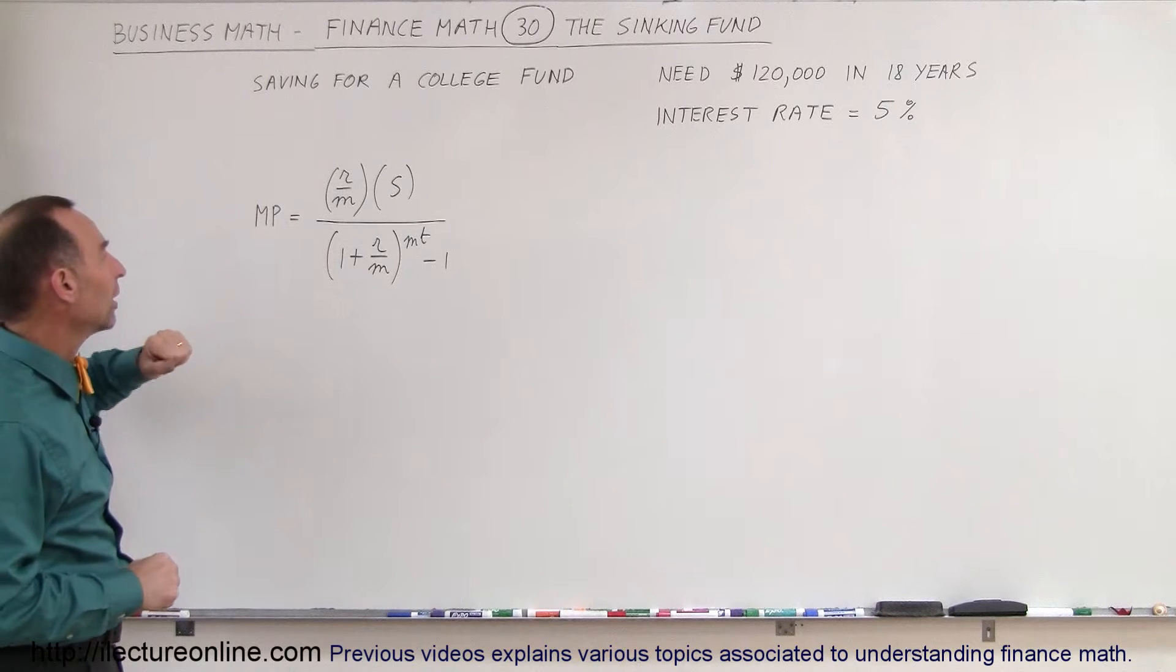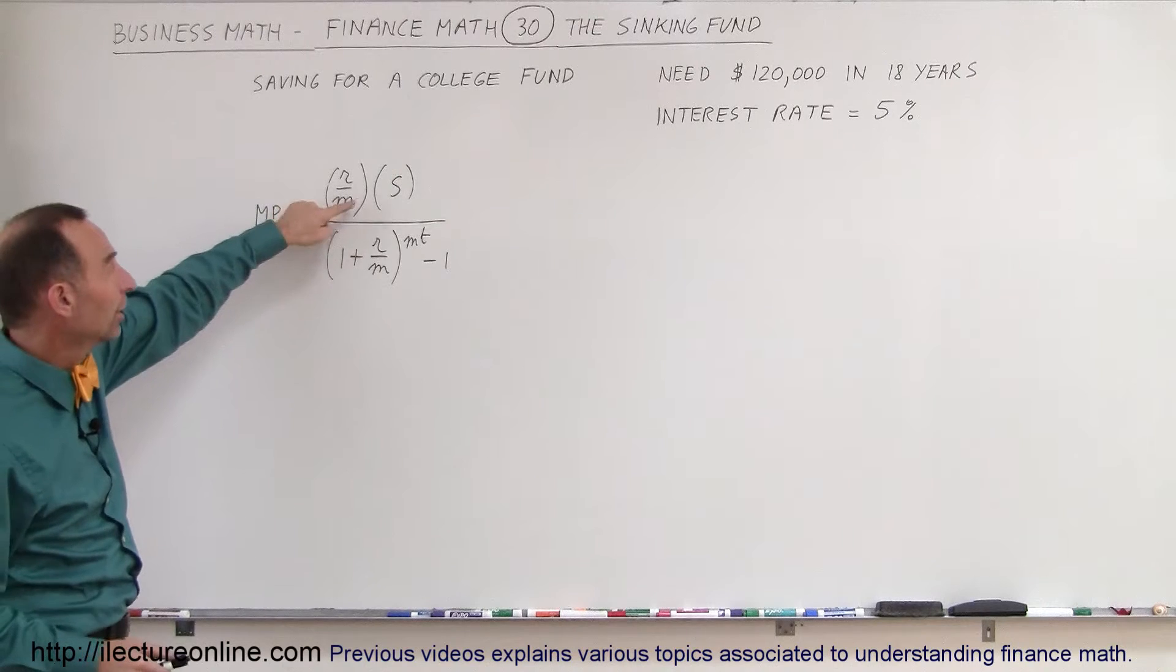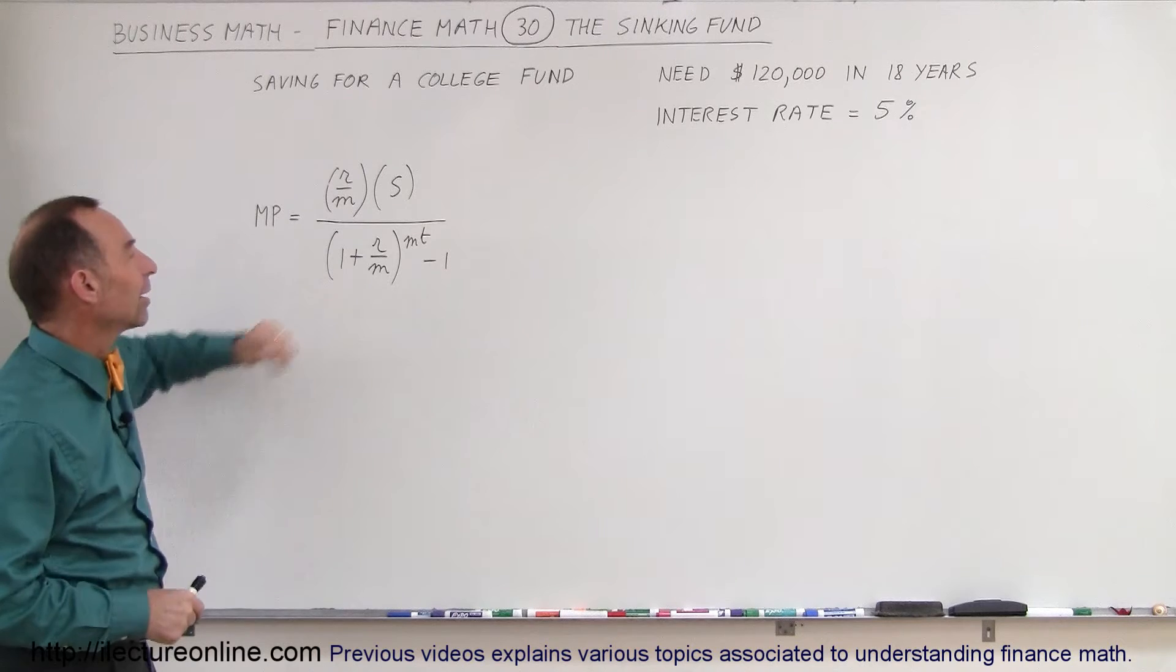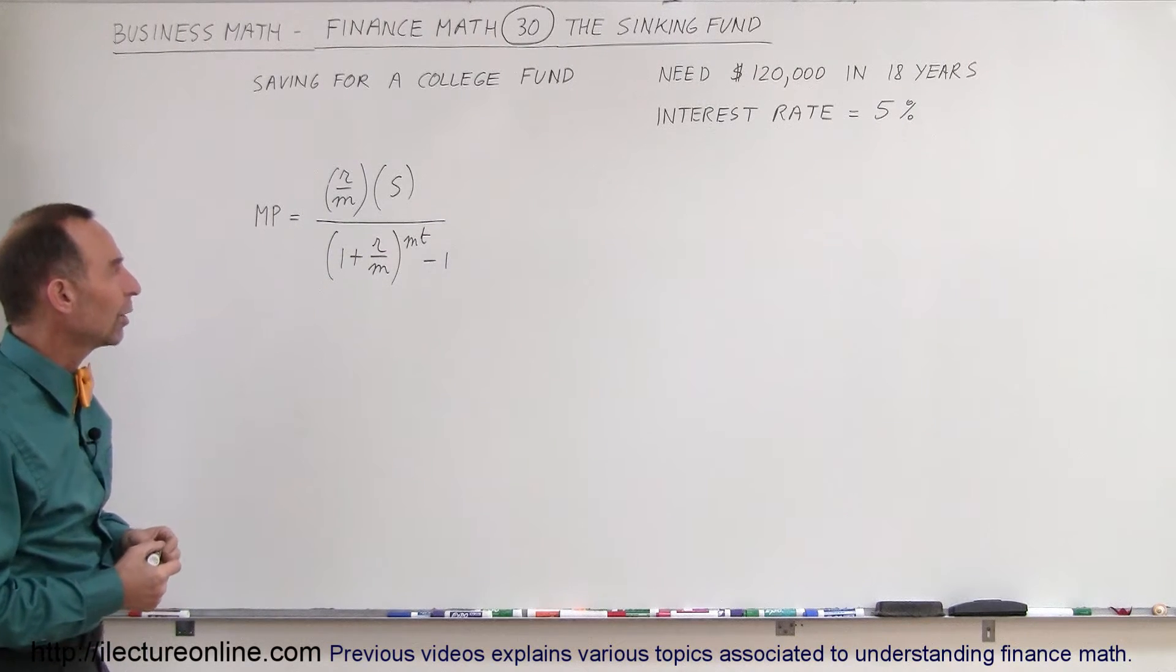Here's the equation on how to do that. The monthly payments must be equal to the rate divided by the number of months per year times the sinking fund amount that you need, $120,000, divided by this quantity and this looks pretty familiar as we use this in other equations as well.